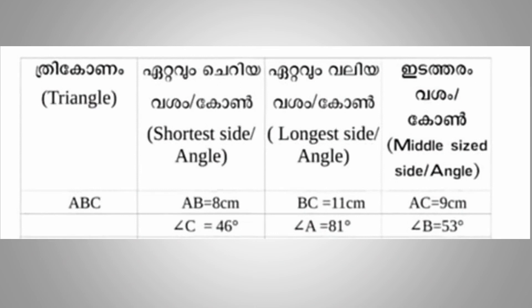In triangle A, B, C: the shortest side A and C gives the shortest opposite angle. AB is equal to 8 cm — that is the shortest side, opposite to the smallest angle C, which is 46 degrees. The longest side B and C is opposite to the longest angle, which is 73 degrees.